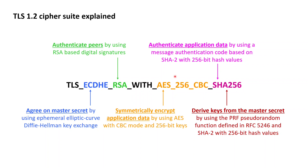The last part of this cipher suite — its tail, so to speak — reads SHA-256, which stands for the SHA-2 cryptographic hash function with 256-bit hash values. Within TLS 1.2 this cryptographic hash function is used in two places. The first place is as part of the HMAC message authentication code that's used to provide authenticity to the application data exchanged between the client and the server.